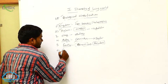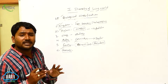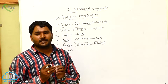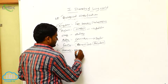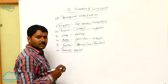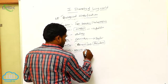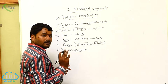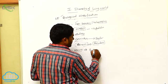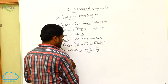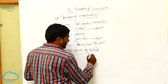Next thing is genus. Genus is an obligatory taxa. It is made up of one or more closely related species. For example, if you take genus Panthera — Panthera is a genus, and this genus has different types of species.